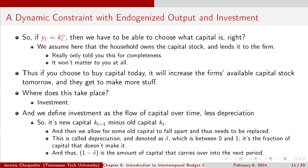Assume the household owns the capital stock and lends it to the firm. If you choose to buy capital today, it increases the firm's available capital stock tomorrow. That takes place through investment — Y = C + I. If you're saving, you're investing, and if you're investing, you're lending your capital to the firm. Investment is really the flow of capital over time, less depreciation: Iₜ = Kₜ₊₁ − (1 − δ)Kₜ — that's new capital minus old capital, allowing for some capital to fall apart and need replacement.